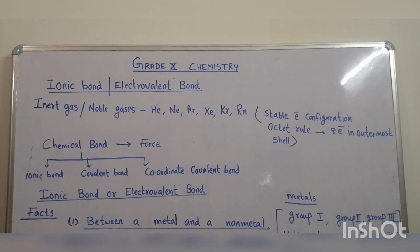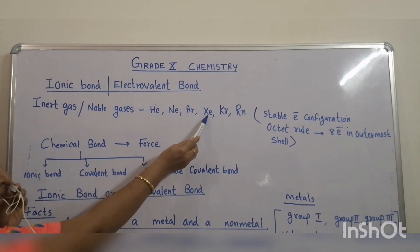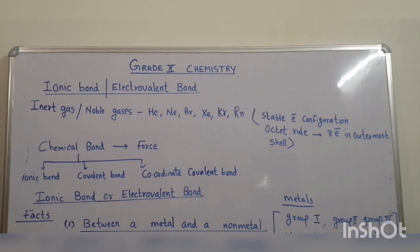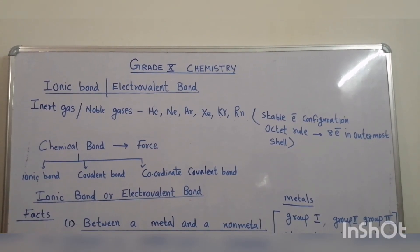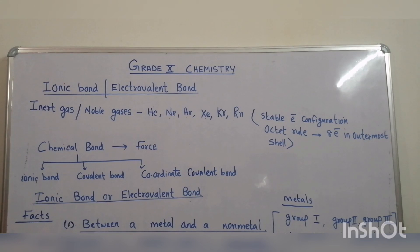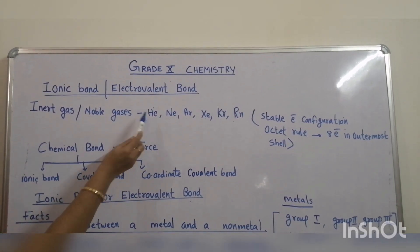Welcome to grade 10 chemistry: ionic bond or electrovalent bond. Inert gases or noble gases like helium, neon, argon, xenon, krypton and radon do not take part in chemical bonding as they have a very stable electronic configuration. They have 8 electrons in the outermost shell except helium.